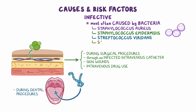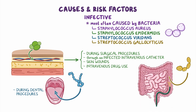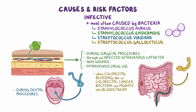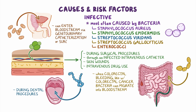Additionally, Streptococcus gallolyticus is normally found in the intestinal flora, so when there's colorectal bleeding, like with colorectal cancer, these bacteria can migrate into the bloodstream. On the other hand, enterococci are a part of the normal urogenital flora and can enter the bloodstream via genitourinary catheterization or surgery.